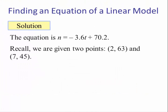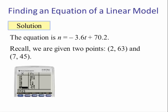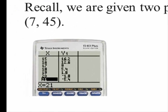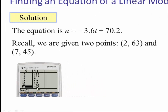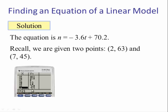We're given the points (2, 63) and (7, 45), so the X axis spans from 2 to 7. Going back to the table and scrolling until we start seeing negative numbers for Y will help define which X values to use, because in terms of this problem negative Y values do not make sense.